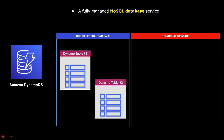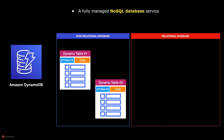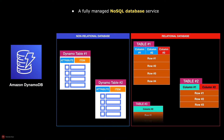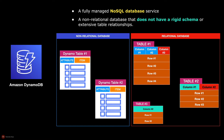Amazon DynamoDB is a fully managed NoSQL database composed of tables, items, and attributes. The items and attributes in DynamoDB are equivalent to the records and columns in a relational database like Amazon RDS. The term NoSQL refers to a type of non-relational database that does not have a rigid schema or extensive table relationships.